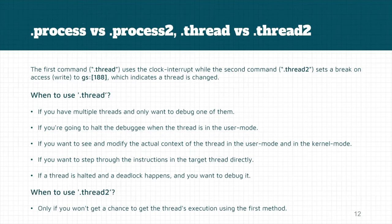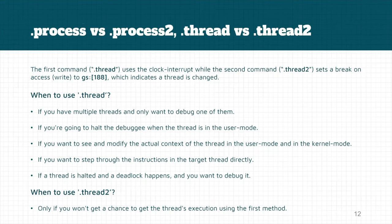The same thing applies to .thread — there is a .thread command and a .thread /2 command. The .thread command works the same as .process using the clock interrupt, but .thread /2 intercepts accesses to the GS:188 address. If Windows wants to change threads, it will update this location, so HyperDbg tries to intercept any writes on this address.